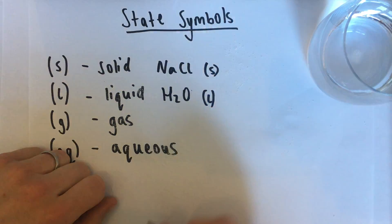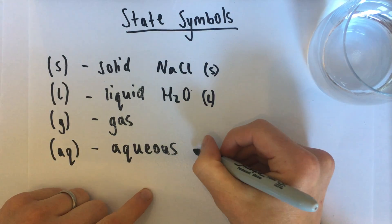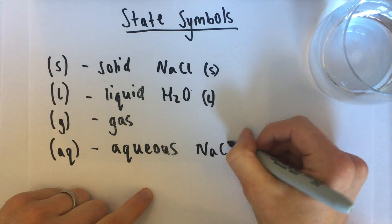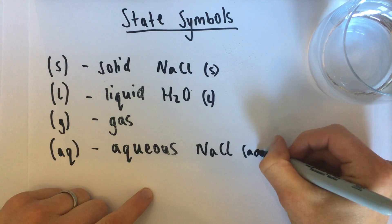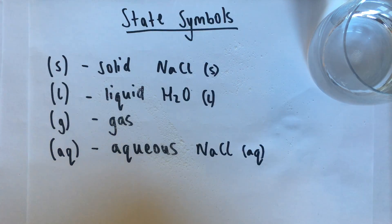H2O was a liquid. And then when I put the salt into the water, it became NaCl AQ. Because it was still salt, but it was now dissolved in that water.